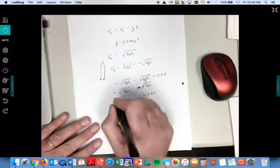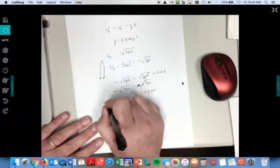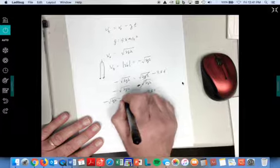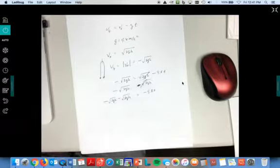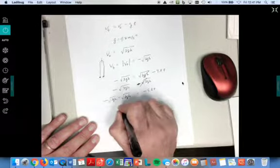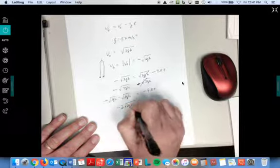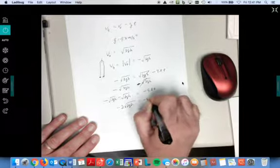Minus square root of 2GH, minus square root of 2GH. How many do I have? I've got two of them. So negative 2 times square root of 2GH equals negative 9.8 T.